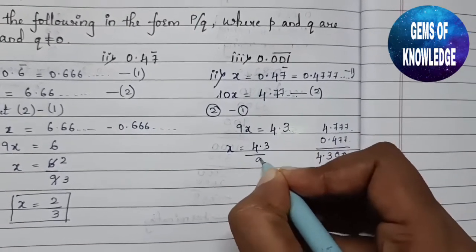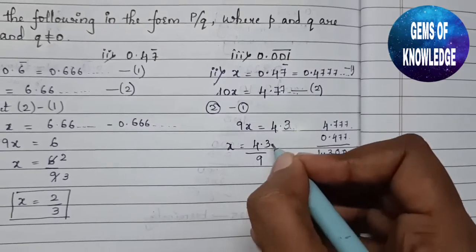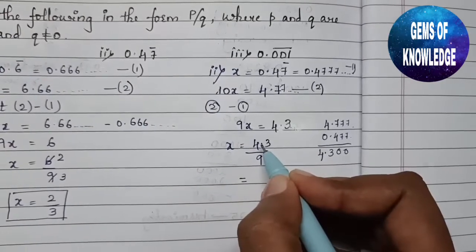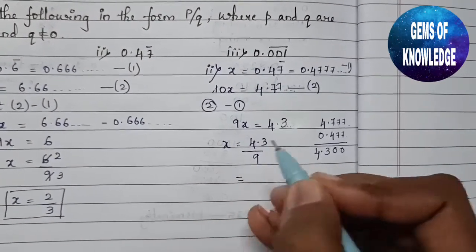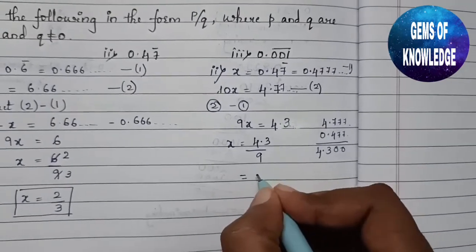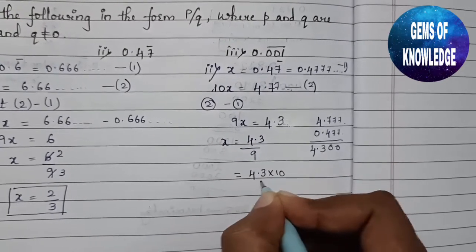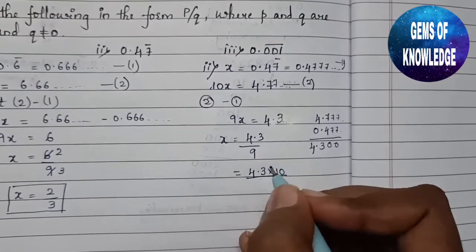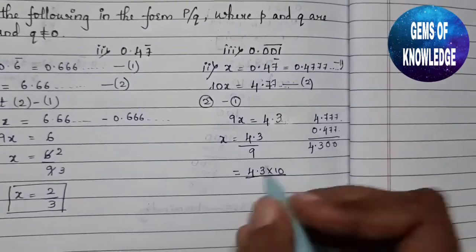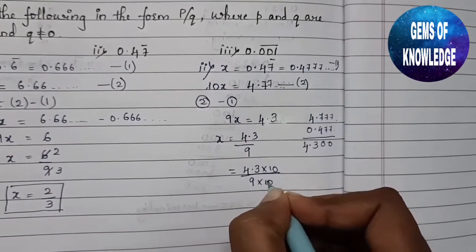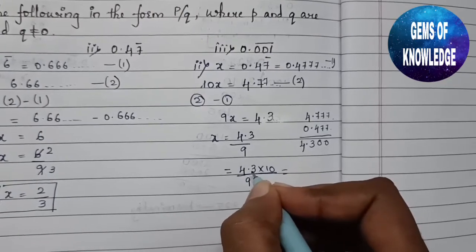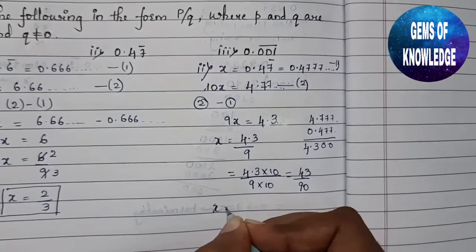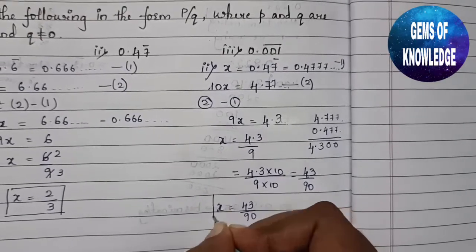So x equals 4.3 divided by 9. Since there is a decimal point in the numerator, we need to remove it. After the decimal only one digit is present, so we multiply both numerator and denominator by 10: 4.3 times 10 gives 43, and 9 times 10 gives 90. Therefore x equals 43 divided by 90.